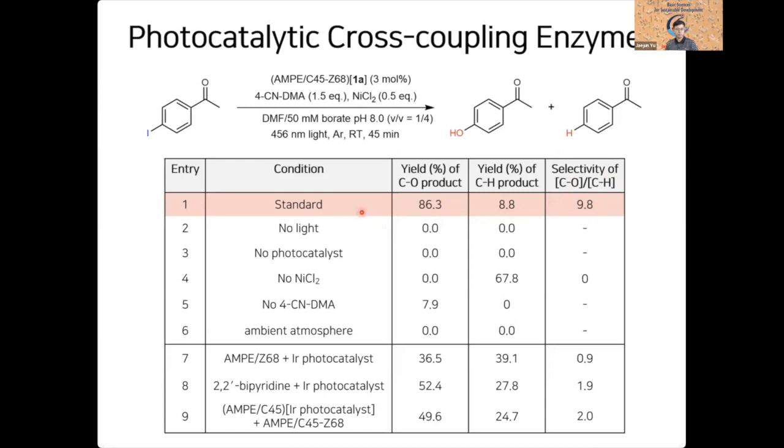In contrast, in the absence of any reaction components that are necessary for these reactions, very little or no cross-coupling products were generated, suggesting that this enzyme operates via photocatalytic and single-electron-mediated cross-coupling reactions that require both iridium and nickel catalysts. The cross-coupling product and selectivity decrease if we detach one or both inorganic catalysts from the protein.